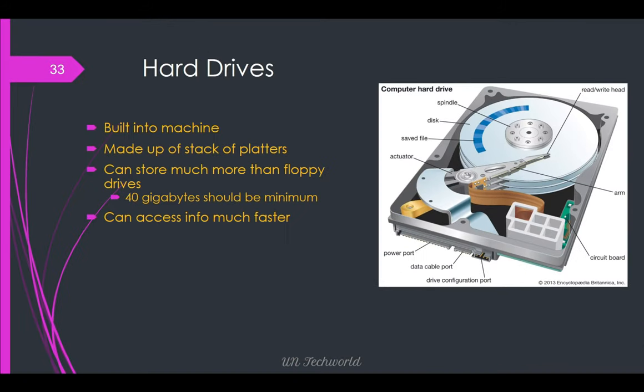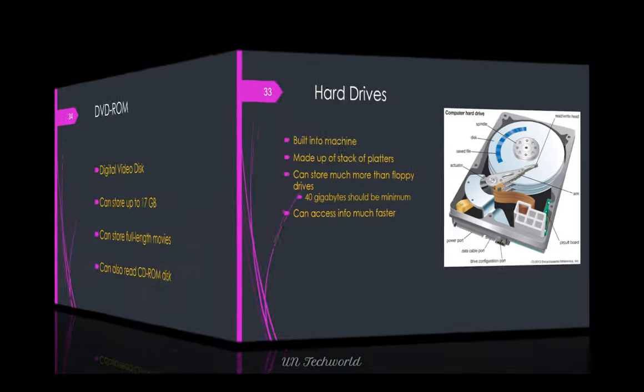Hard drives are built-in to the machine, made up of a stack of platters, and can store much more than floppy drives. The minimum hard disk was 40 GB; nowadays 1 TB, 4 TB, and 8 TB hard disks are available in the market. Access info is much faster.